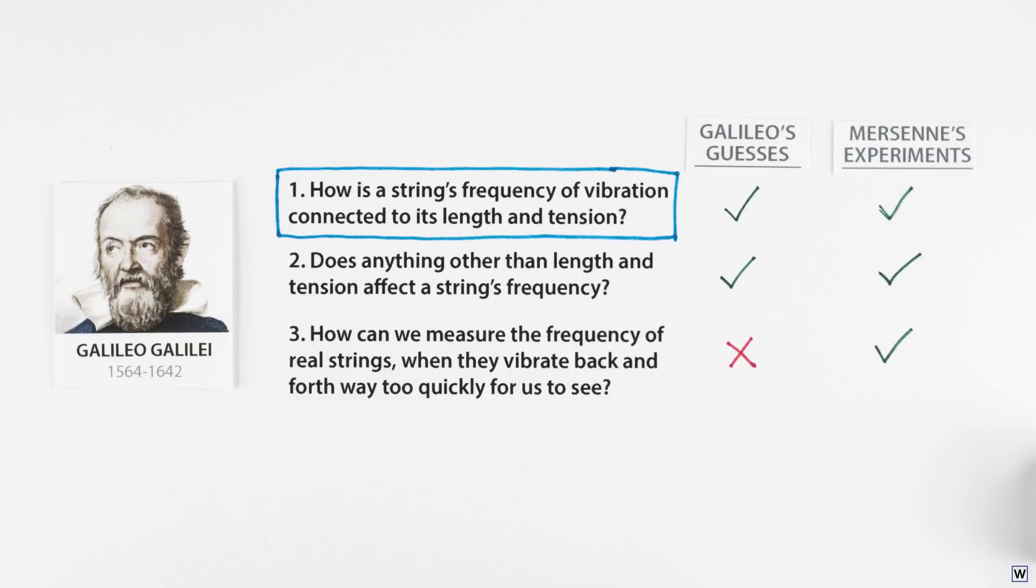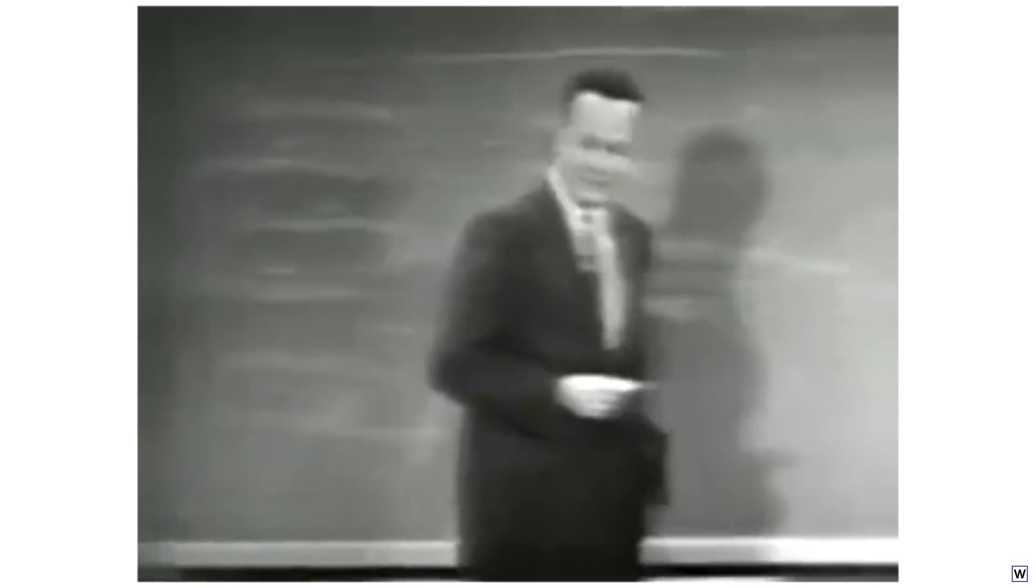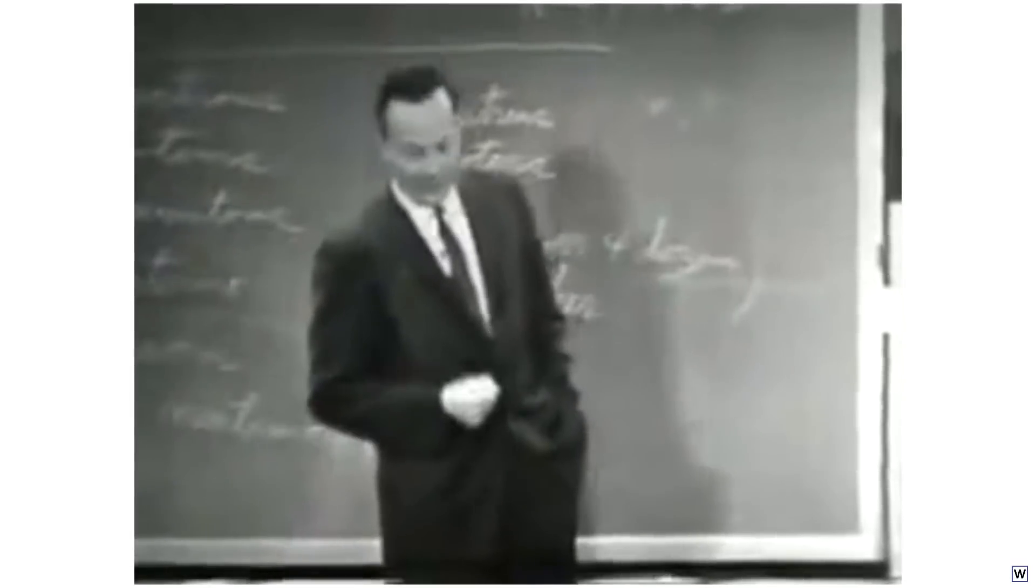Now, Galileo's approach of guessing an answer first may not seem very scientific. Let's see what the Nobel Prize winning physicist Richard Feynman has to say about this: 'Now, I'm going to discuss how we would look for a new law. In general, we look for a new law by the following process. First, we guess it.'